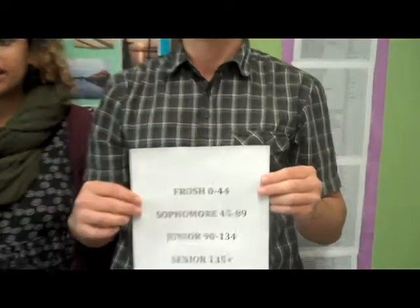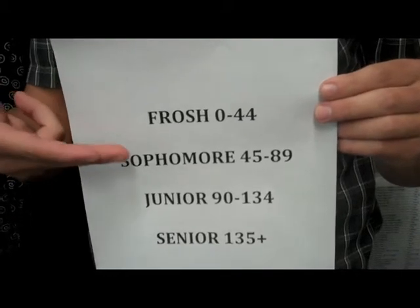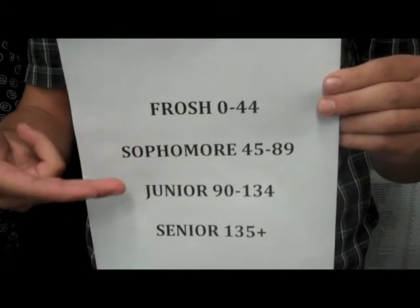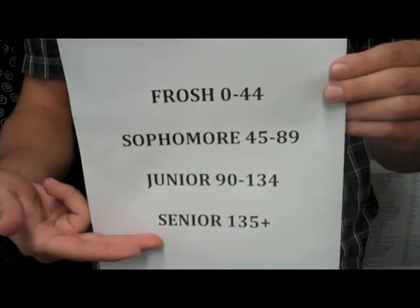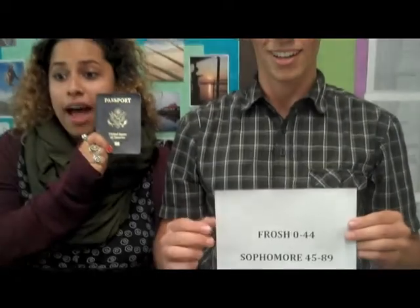EAP determines class level based on your cumulative credits. If you will have fewer than 90 credits when you go abroad, put sophomore. If you will have 90 to 134, put junior. If you'll have over 135 credits when you go abroad, put senior. If you've got a passport, enter that information in. If you don't have a passport, check the no box — you'll have a chance to add the info later before you go abroad.